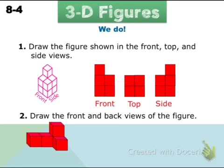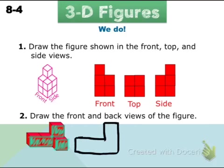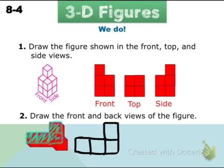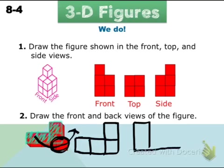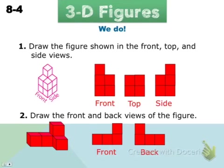For number two, draw the front and back view. Looking straight on from the front, we wouldn't see the depth — we'd just see this backwards L shape: three on the bottom and one up top on the right. To draw the back view, think as if the whole figure were turned around. Turned around, we'd basically see the same thing — just without this one cube — so the back view looks just like the front, basically an exact opposite.